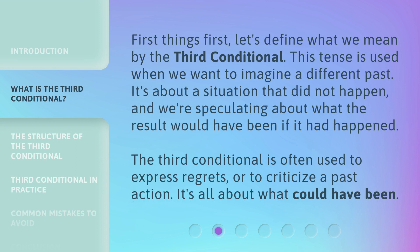First things first, let's define what we mean by the third conditional. This tense is used when we want to imagine a different past. It's about a situation that did not happen, and we're speculating about what the result would have been if it had happened. The third conditional is often used to express regrets, or to criticize a past action. It's all about what could have been.